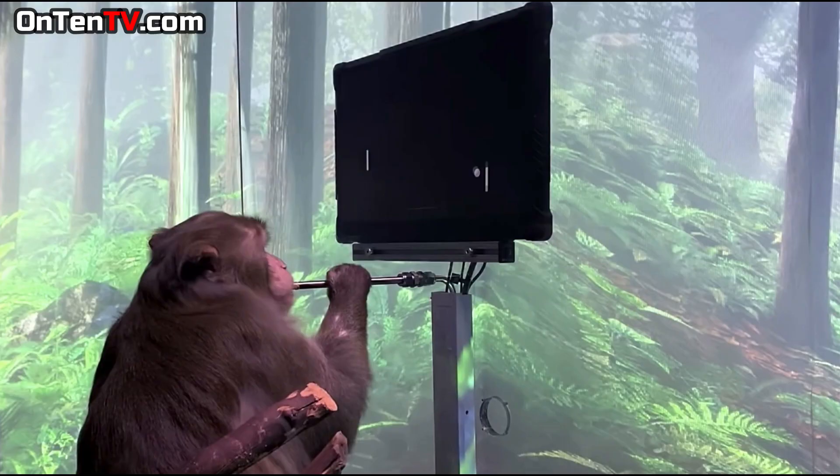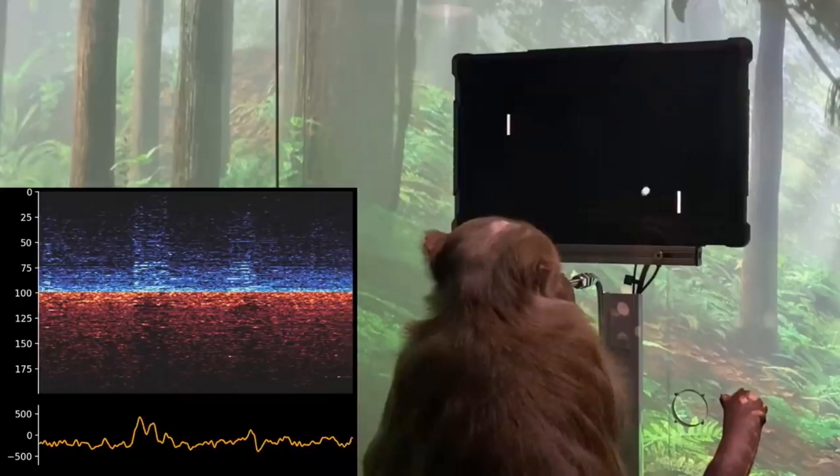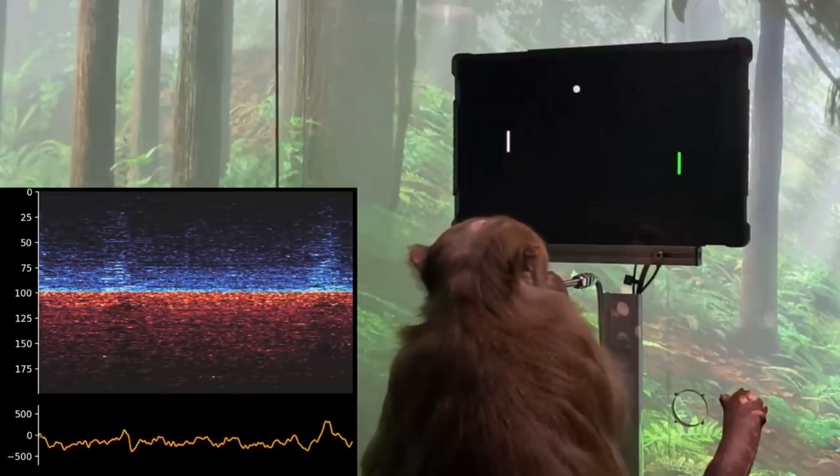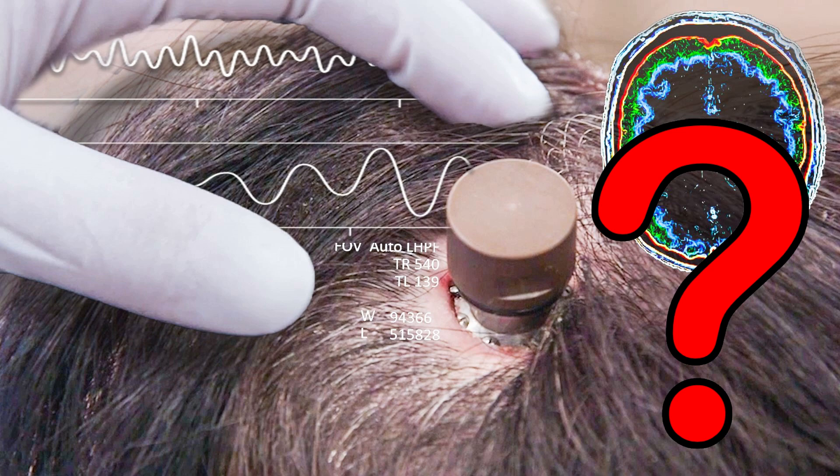The monkey showed Neuralink that this is possible and it might be time to use this chip on a human. If you remember, in the pig's brain 1,000 signals were being scanned, but the chip that was placed in the monkey's brain was controlling 2,048 signals.